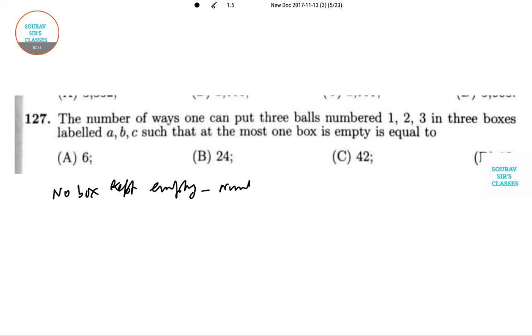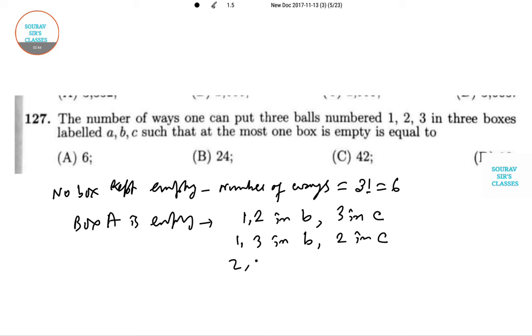The number of possible ways is actually 3 factorial, which is 6. Now if we take box A as empty, combinations are: 1,2 in B and 3 in C, or 1,3 in B and 2 in C, or 2,3 in B and 1 in C.